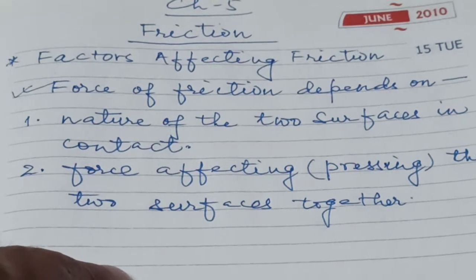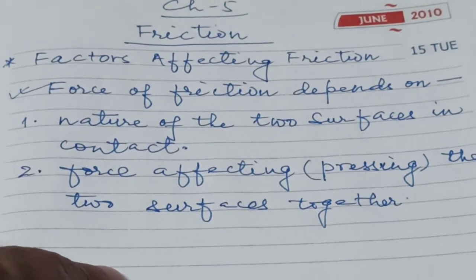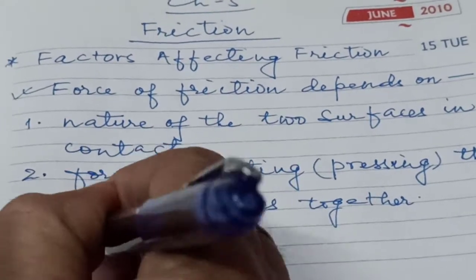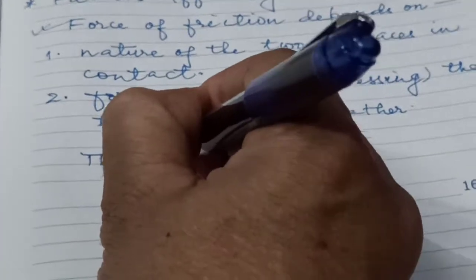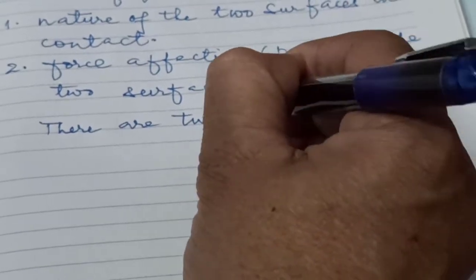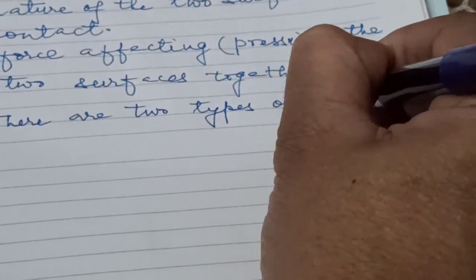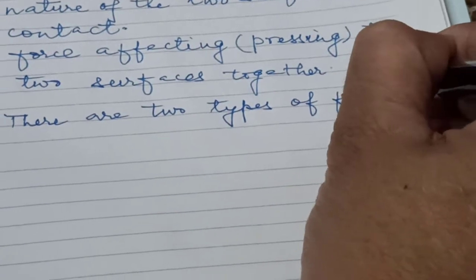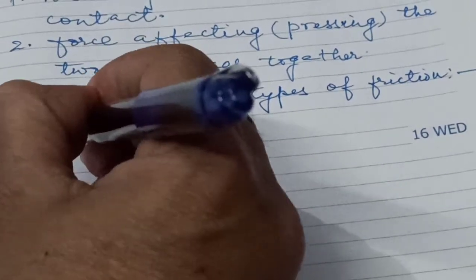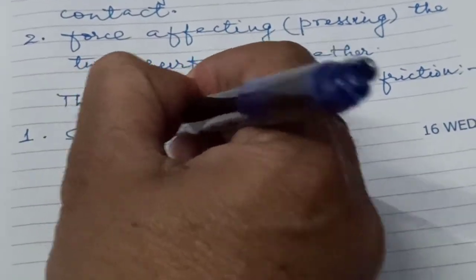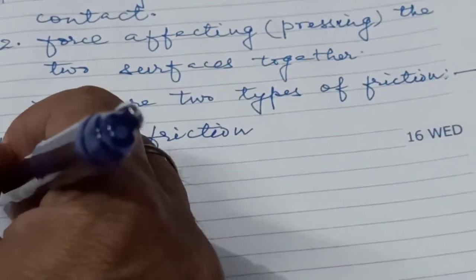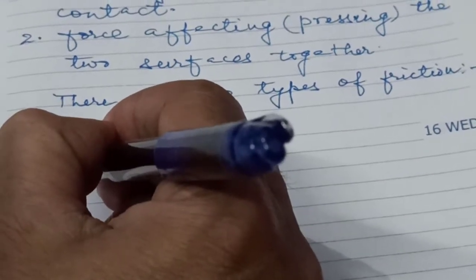We can say that there are two types of friction. First, static friction. And second, sliding friction.